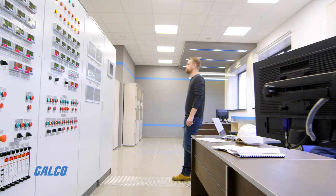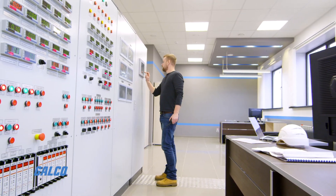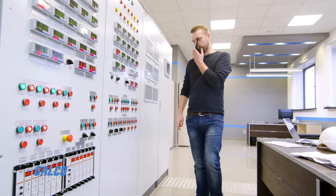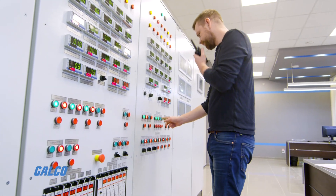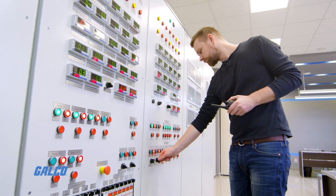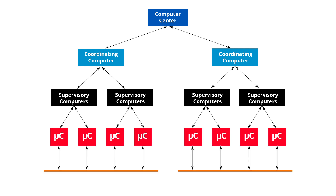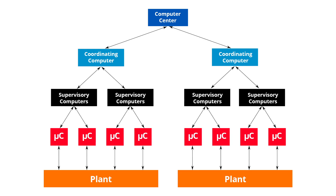A DCS consists of numerous local controllers in various sections of a plant control area, and are connected via a high-speed communication network. In DCS control systems, data acquisition and control functions are carried through multiple DCS controllers, which are microprocessor-based units, distributed functionally and geographically over the plant, and situated near areas where control or data-gathering functions are being performed.